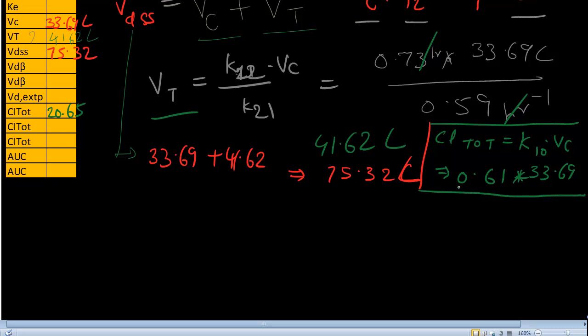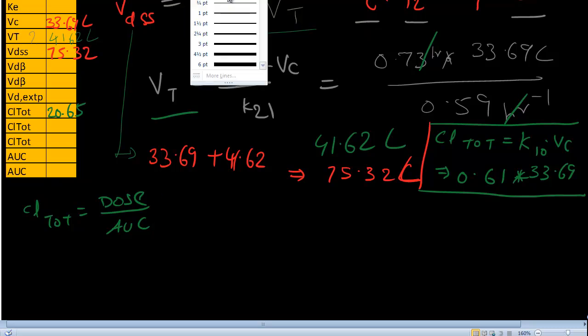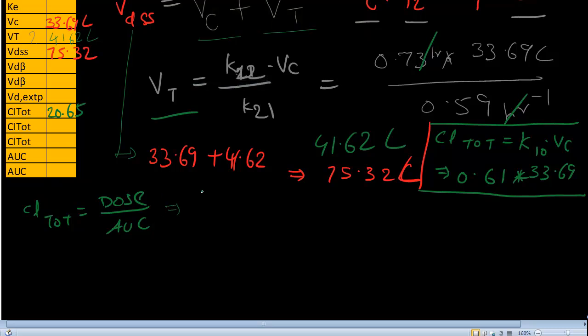And there's another way we can calculate the clearance total. Clearance total is equal to dose over AUC. I hope you remember this from one compartment IV bolus equation. So what is dose? 1000 milligrams is the dose. What is AUC? We have no idea what AUC is. Let's calculate AUC now.